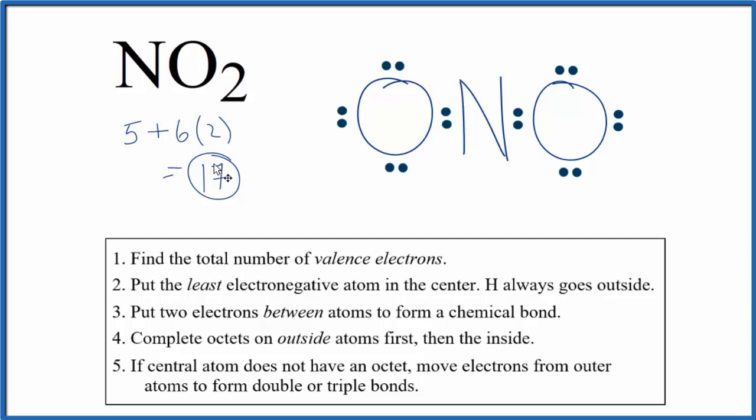Normally, when we're drawing Lewis structures, we're used to seeing pairs of electrons. In this case, we have a single electron. We're going to put it right here. And now we've used all 17 valence electrons. But the nitrogen only has 5.